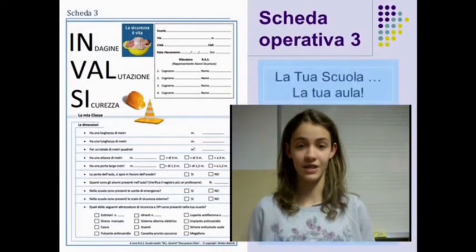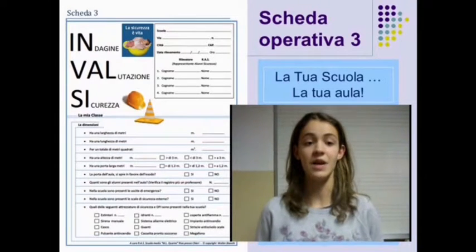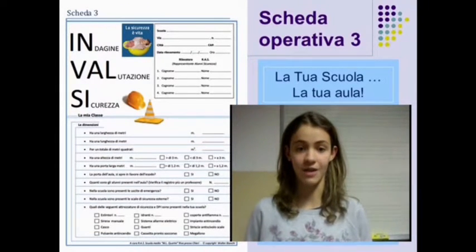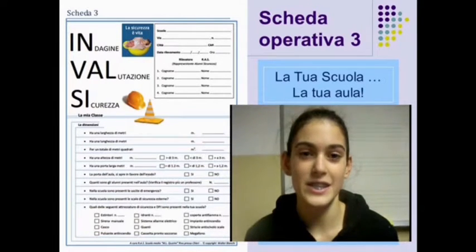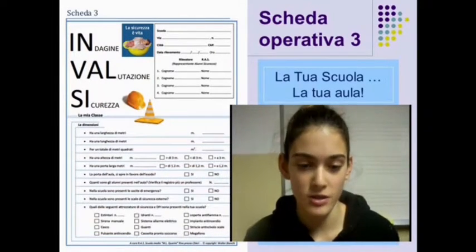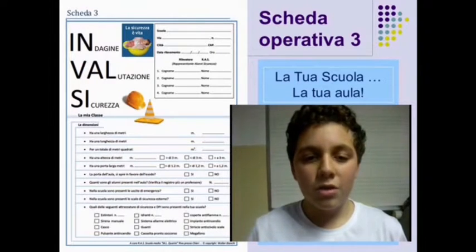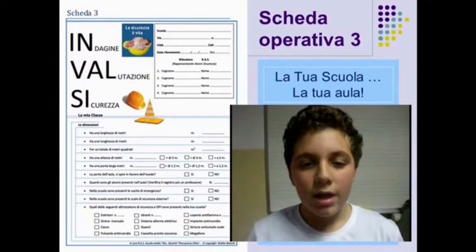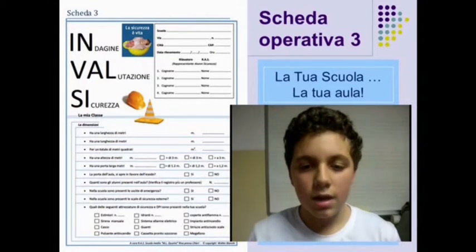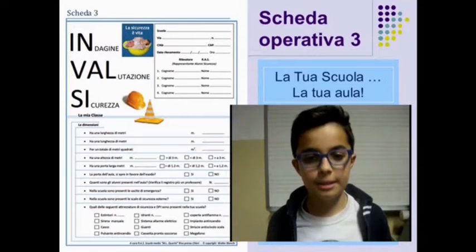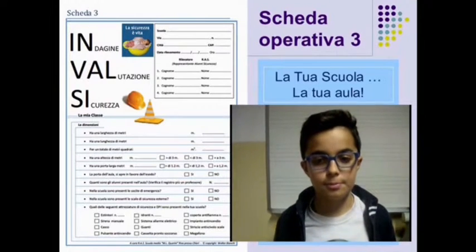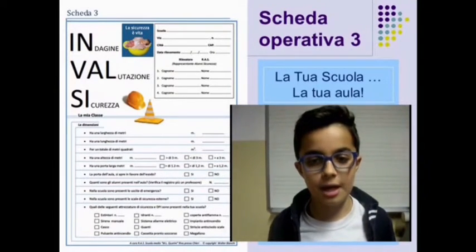La scheda operativa numero 3 focalizza la nostra attenzione all'interno della scuola, e in particolare all'interno della nostra aula e negli spazi comuni. Verifichiamo le caratteristiche generali dell'aula, le dimensioni, le tipologie di porte, le caratteristiche delle uscite di sicurezza, le scale di sicurezza esterne, le attrezzature di sicurezza, i dispositivi DPI, cioè i dispositivi di protezione individuale.